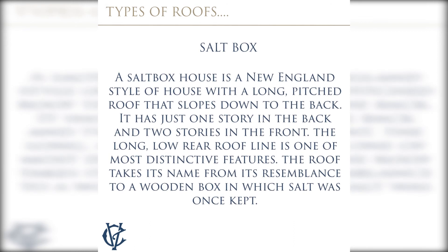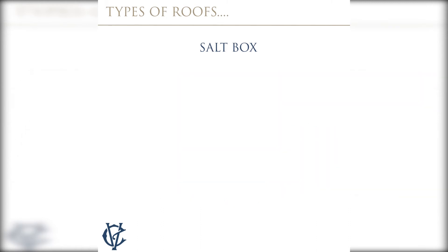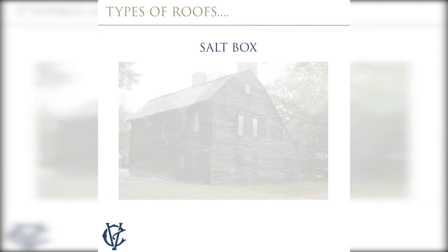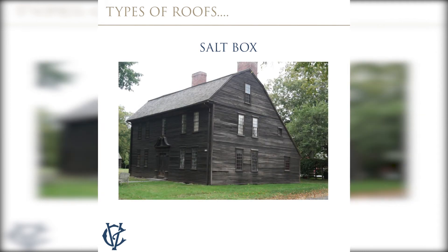A saltbox house is a New England style of house with a long pitched roof that slopes down to the back. It has just one story in the back and two stories in the front. The long, low rear roof line is one of the most distinctive features. The roof takes its name from its resemblance to a wooden box in which salt was once kept.